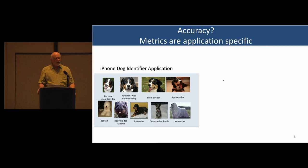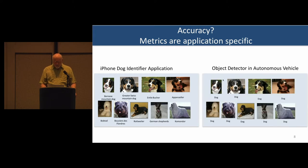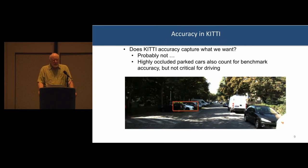I think it's pretty obvious that accuracy, what we are looking for in accuracy, is pretty much application dependent. If you want to do a dog identifier for an iPhone app, then you sure want to be able to distinguish among a wide variety of different dogs. But if you're building an autonomous driving system, if you're building an object detector, those dogs are just dogs. I don't know anybody if you're really trying to distinguish between a dachshund and a greyhound in terms of your object detector, but probably not.